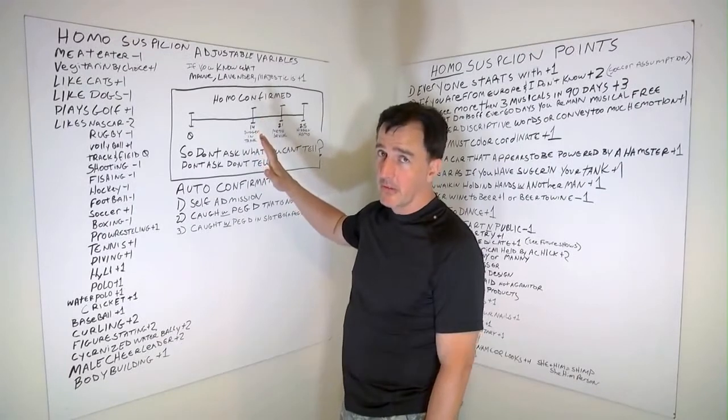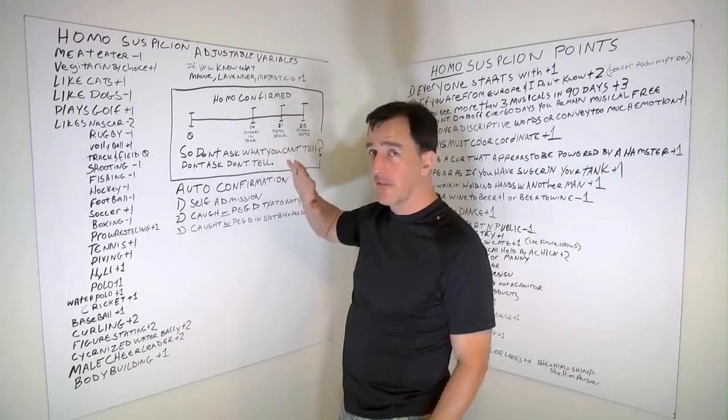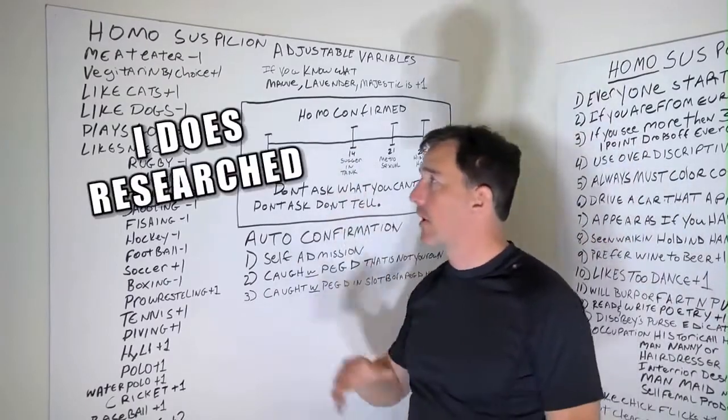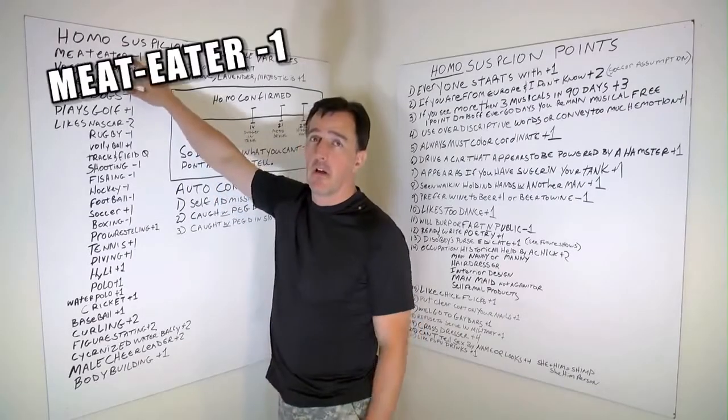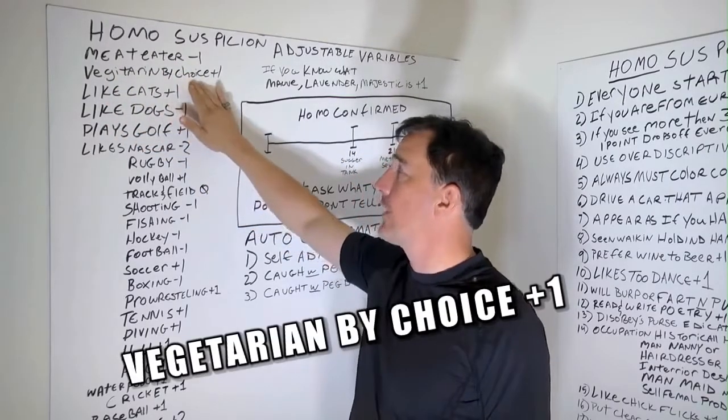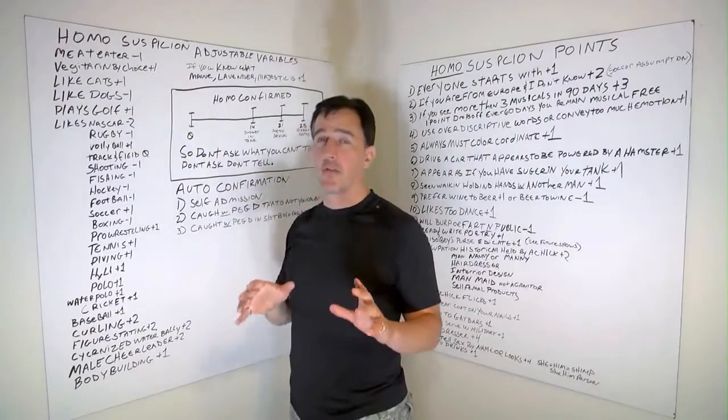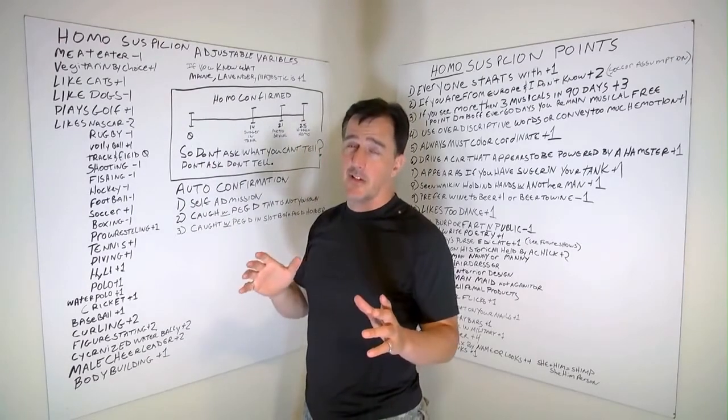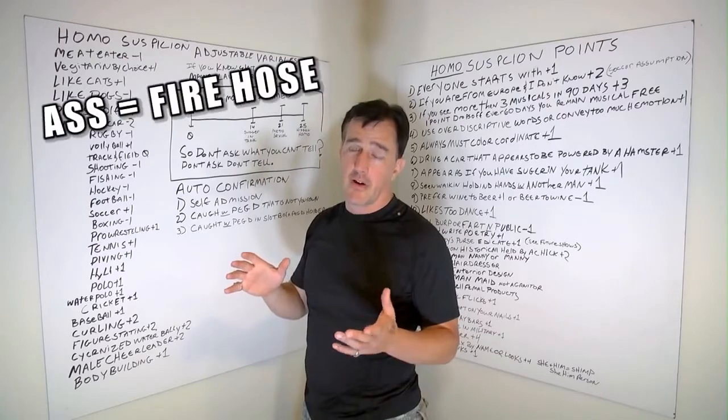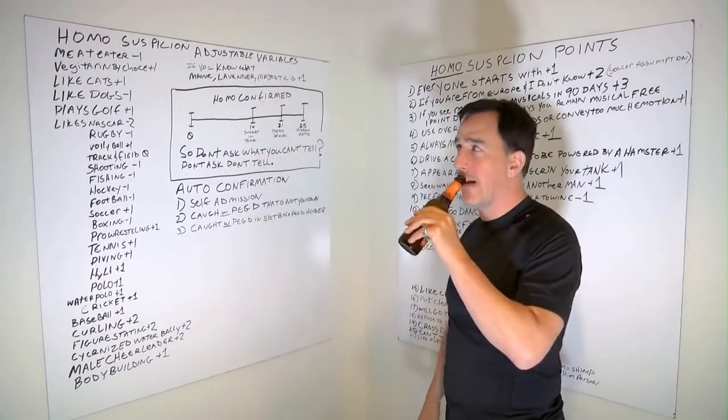Adjustable variables. Okay, these are things that you kind of decide on the fly what's going on. All of them, but a few, are input from other people. If you are a meat eater, minus one point. Now, if you're a vegetarian by choice. Okay, I'm not talking about if you develop some kind of digestion track issue and you got to switch to like a veggie diet because your ass turns into a water cannon or something. You got to adjust your diet.